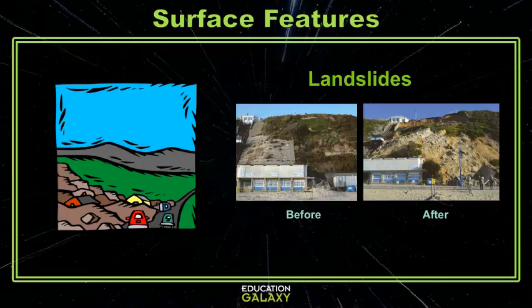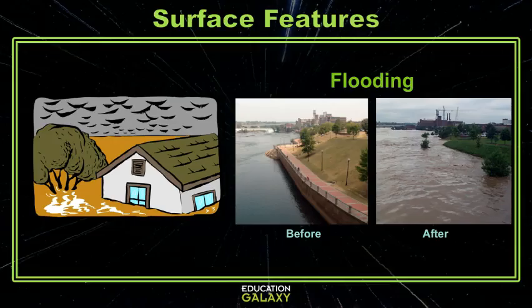Landslides are another destructive force, where a portion of rock, earth, or debris detaches and moves down slope. Flooding is another example of a destructive change. All of these changes happen very rapidly.